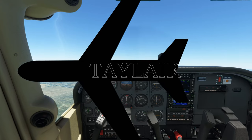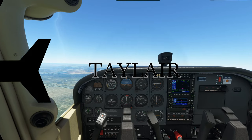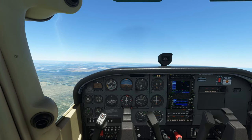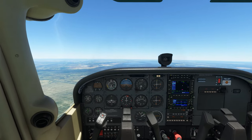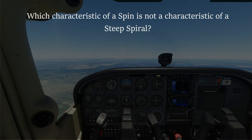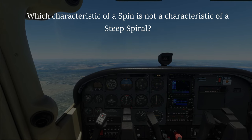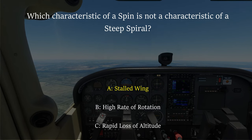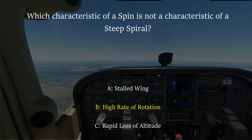Welcome back. It's time for another Theory Quickie. Here's a question from the FVA database: Which characteristic of a spin is not a characteristic of a steep spiral? A. A stalled wing. B. A high rate of rotation. Or C. A rapid loss of altitude.